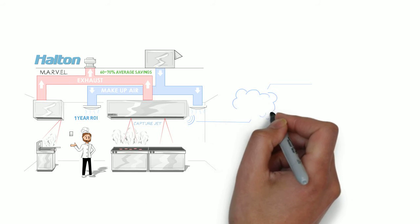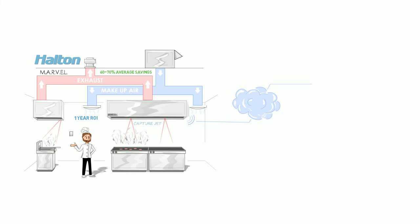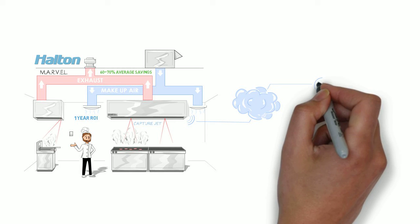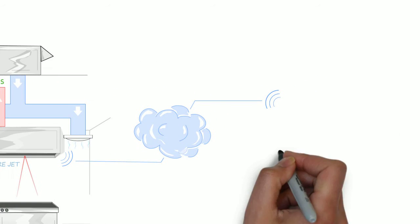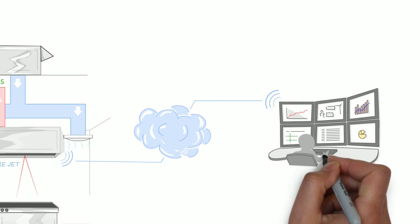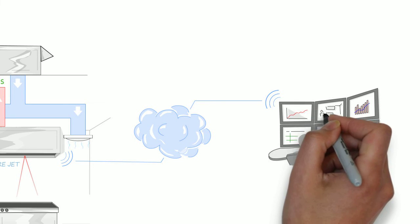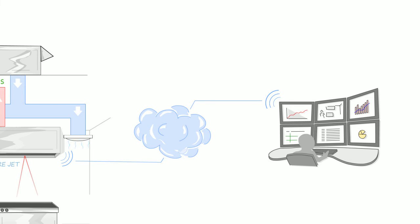Halton can continually monitor the status of your equipment and troubleshoot it remotely from their network operations center. Through the internet, Marvel automatically notifies Halton should any issue arise, and many problems can be detected and resolved before kitchen staff even notices.